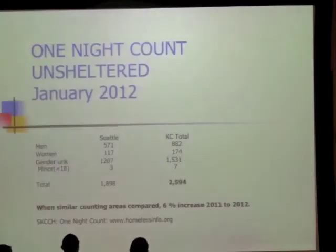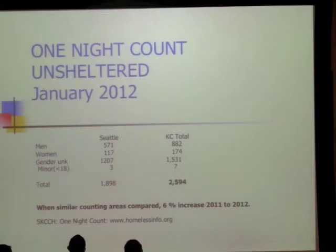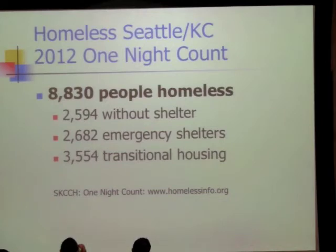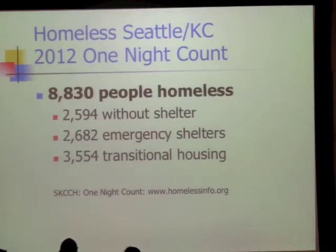I don't have the 2013 data, but in January 2012 there were about 2,500 to 2,600 unsheltered people sleeping out — and we know this is an underestimate, since it doesn't count people in deep woods, couch surfing, or in jail that night. The full report, including emergency shelters, transitional housing, and unsheltered, totals about 8,800 people in the 2012 count, and I think this year's count was about 2% higher.